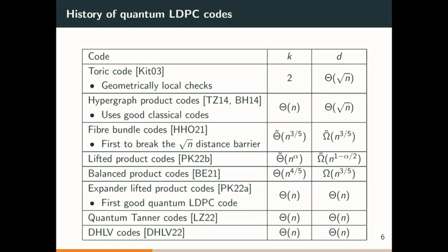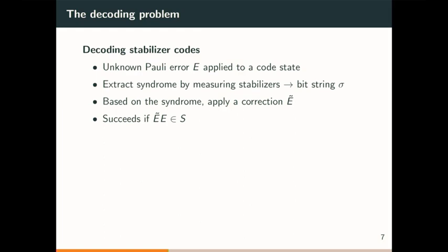For this talk, I'm mainly focusing on quantum Tanner codes. When we have codes with really good parameters, that's great, but in practice we need to actually be able to correct errors when they occur and get back into the code state — this is the decoding problem. Some unknown error E is applied to the code state, we extract the syndrome by measuring the stabilizers to get a classical bit string sigma, input this to our decoder which outputs a correction E-tilde, and decoding succeeds if E-tilde times E is a stabilizer.